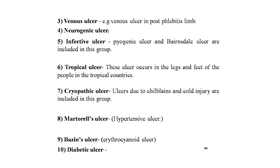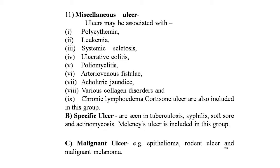Seventh is the cryopathic ulcer — chilblains and cold injury. Eighth is Martorell's ulcer (hypertensive ulcer). Ninth is Bazin's ulcer. Tenth is the diabetic ulcer, covered in detail in the diabetic foot section. Eleventh is miscellaneous ulcers associated with polycythemia, leukemia, systemic sclerosis, ulcerative colitis, poliomyelitis, arteriovenous fistulas, obstructive jaundice, collagen disorders, chronic lymphedema, and cortisone ulcers. Specific ulcers include tuberculosis, syphilis, soft sore, and actinomycosis. Malignant ulcers include epithelioma, rodent ulcer, and malignant melanoma.